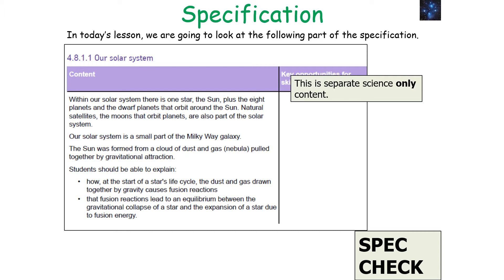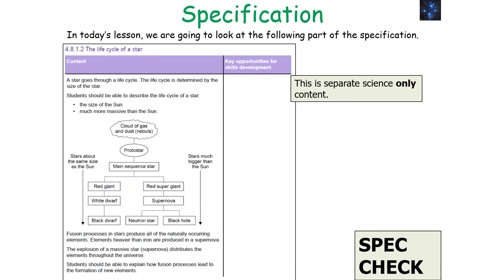This links into the GCSE Separate Science Physics specification: 4.8.1.1, our solar system, and 4.8.1.2, the life cycle of a star.